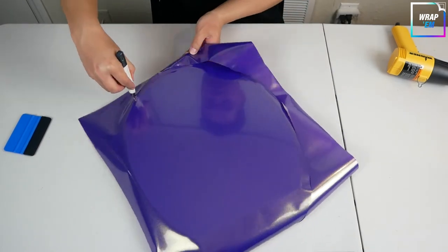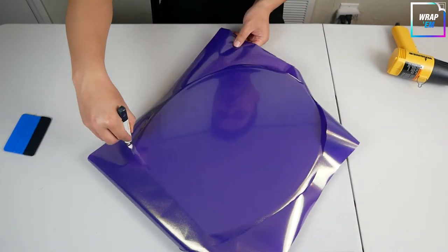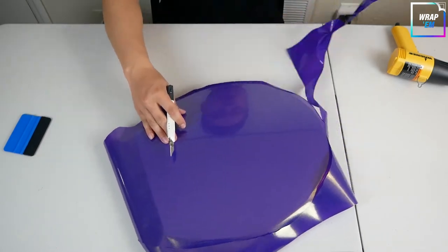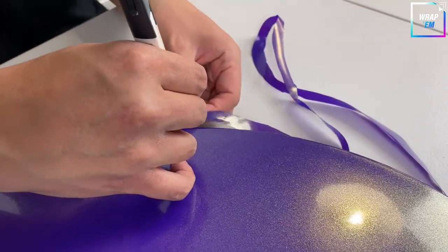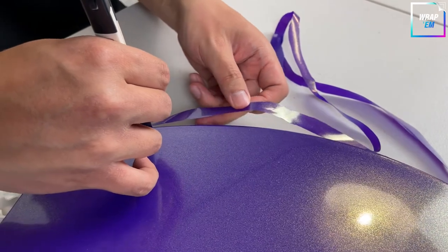Now we are going to trim the excess vinyl. Grab your knife, put the blade flush against the edge and trim the vinyl along the edge.